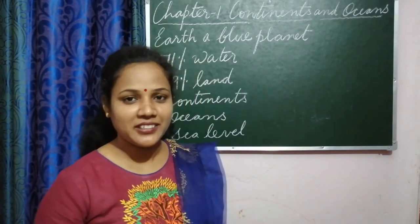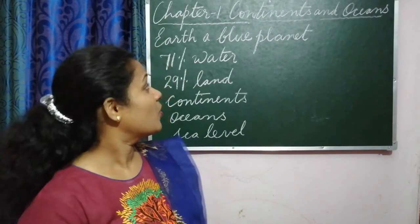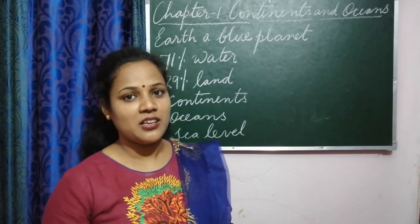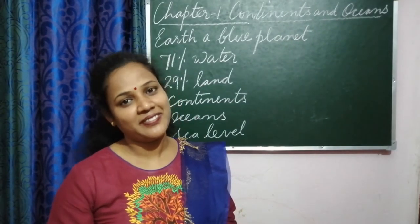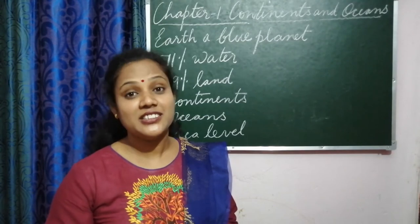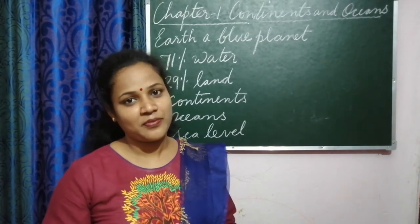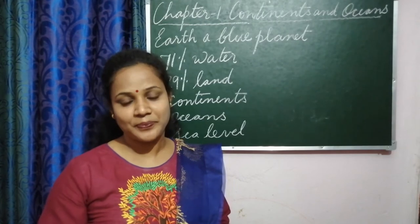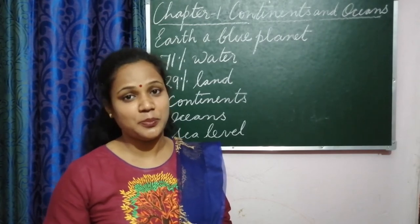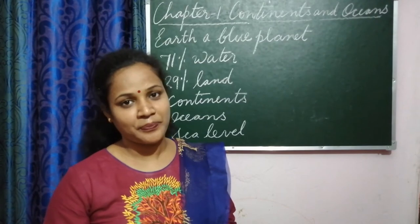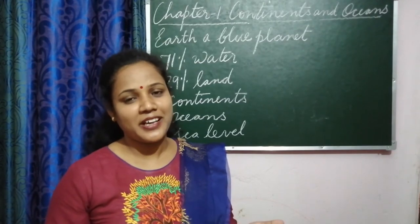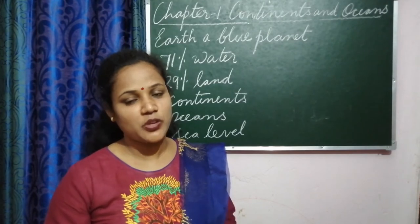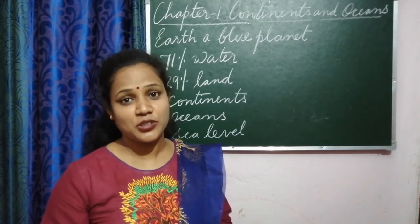Open chapter 1 in your book. That is continents and oceans. So let's begin our class. We have first chapter, continents and oceans. First let us learn about our earth. Our earth is the third planet from the sun, and this is the only planet where life at present exists. We all live on this beautiful planet.